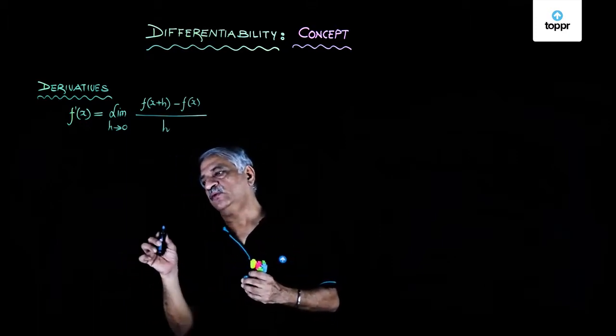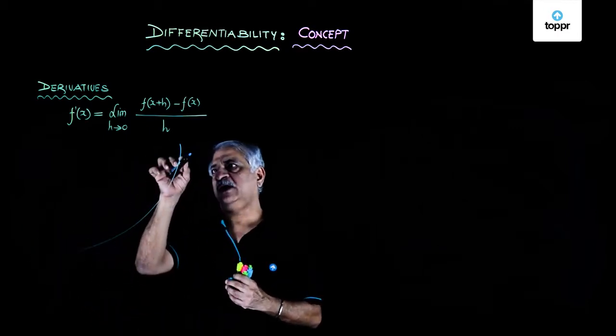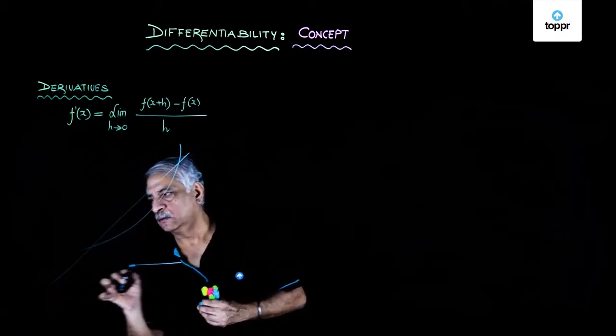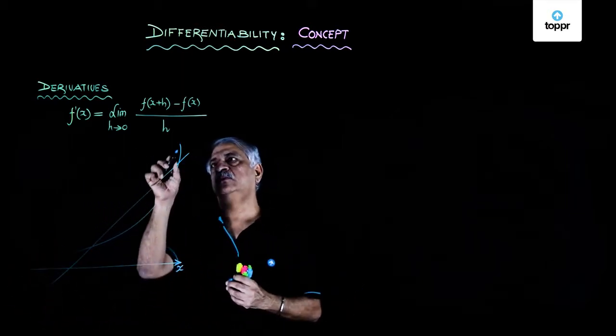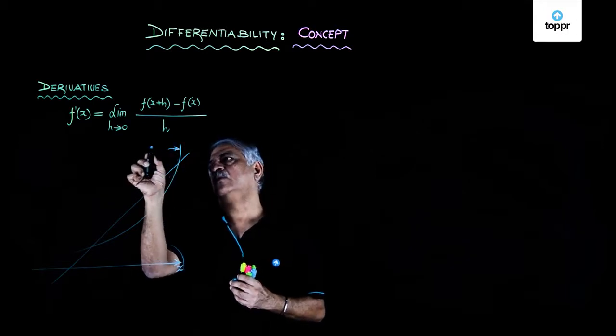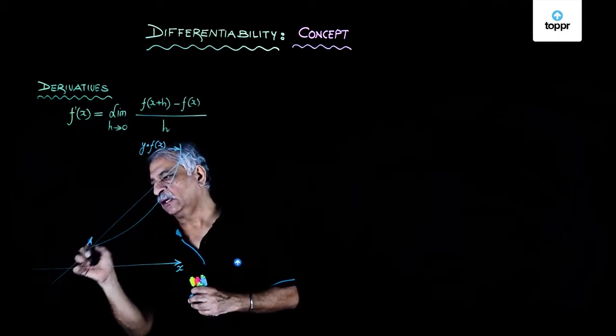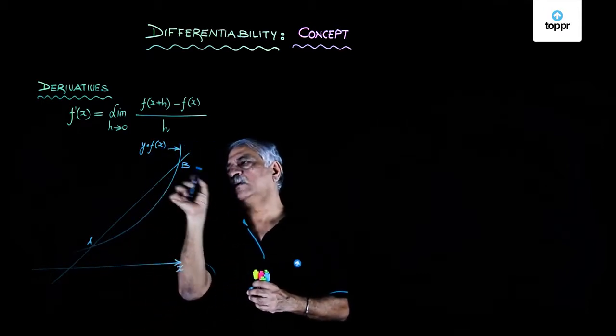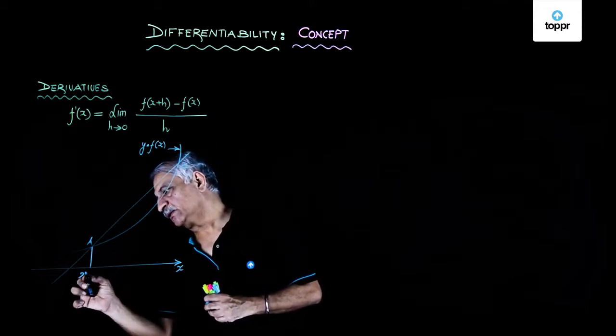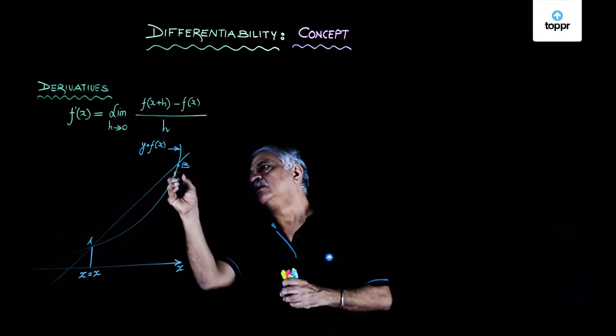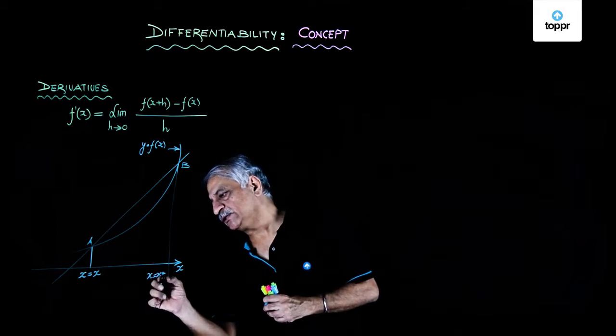And this concept we understood with the diagram that I have a curve which is y = f(x). And I have point A, B, where we take this as x = x, and point B as x = x + h.